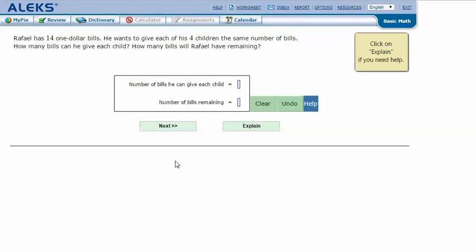Here's an example problem. Raphael has 14 one-dollar bills. He wants to give each of his four children the same number of bills. How many bills can he give each child and how many bills will Raphael have remaining?